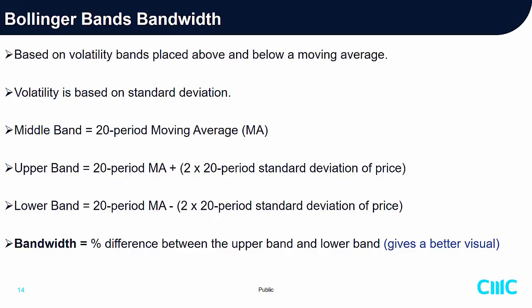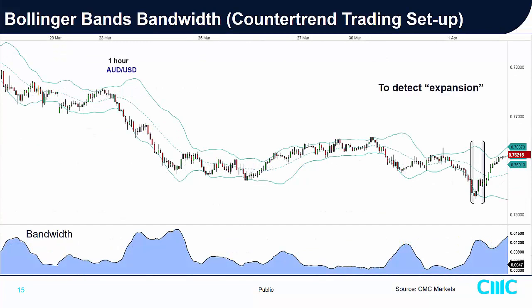Taking the one-hour Aussie dollar chart as an example: to detect expansion, look at the bandwidth — in this period it has started to rise. This rising bandwidth indicates that this particular down move is being overstretched. There is a risk of a snapback rally, which happened in the Aussie dollar in this particular short-term timeframe.